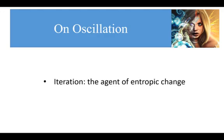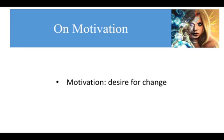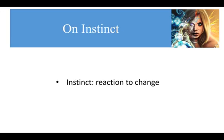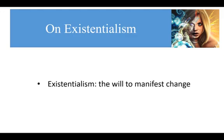Using this logic, I'm going to define more terms in terms of change. Iteration: the agent of change — the agent of entropic, irreversible change. Iteration and chaotic systems always generate something new. Oscillation: regular or repeating change. Motivation: desire for change — the need for change is a great motivator. Instinct is reaction to change, especially sudden change. Realism: the realization that change exists. Existentialism: the will to manifest change.